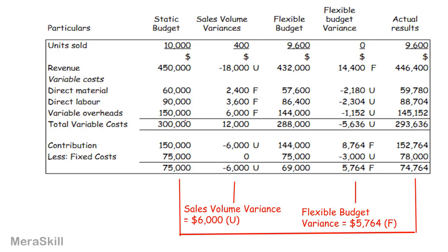This is the same example we started with. The sales volume variance — 6,000 — is the difference between budgeted 75,000 and the flexible budget of 69,000 at actual output. The flexible budget variance is the selling price variance. So here, the selling price variance and the sales volume variance together make up the total sales variance.